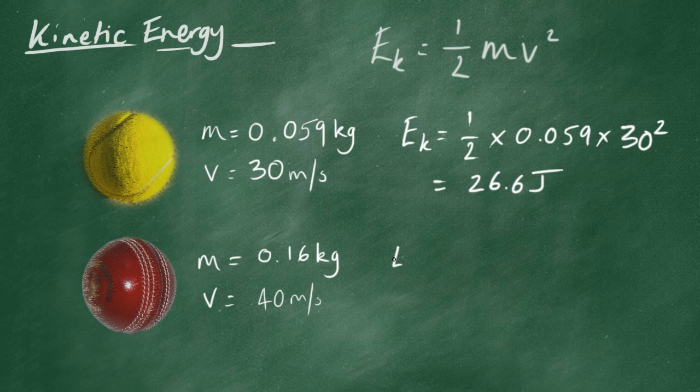The cricket ball, how much kinetic energy does it have? Ek is a half times by the mass, 0.16, times 40, squared.